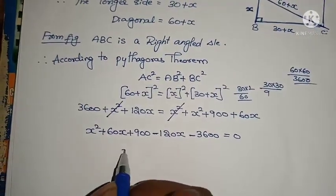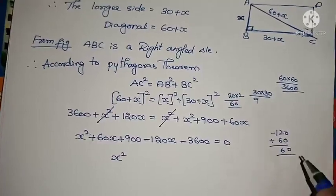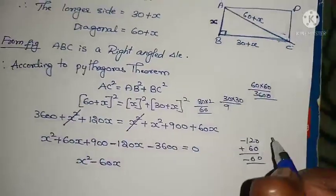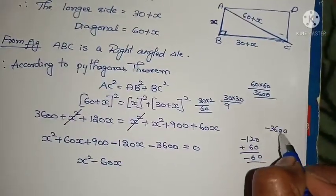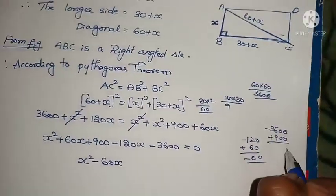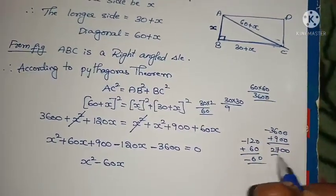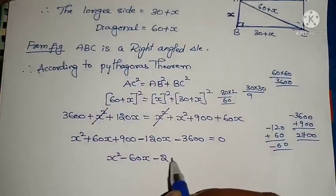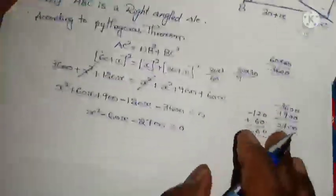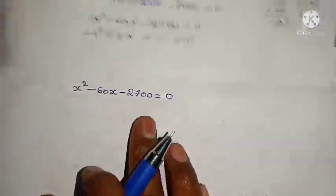After simplification, the quadratic equation becomes X squared minus 60X minus 2700 equals 0. If we use the quadratic formula, the calculation will become very big, so I am using factorization method.